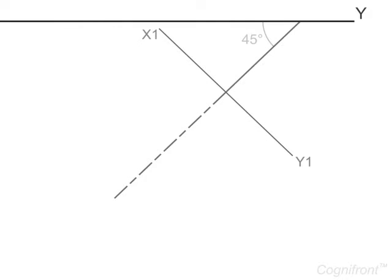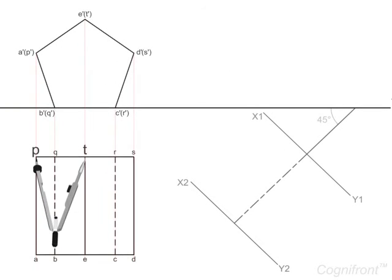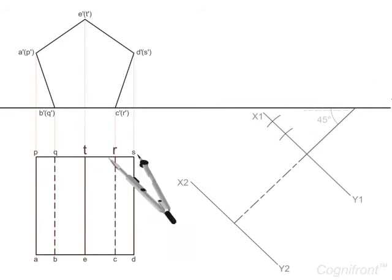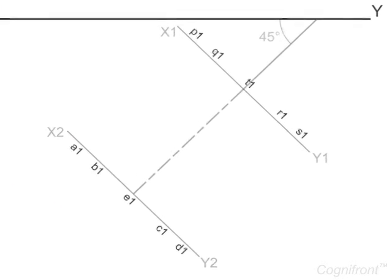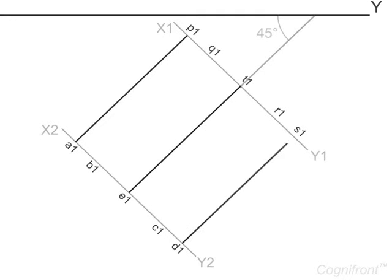Next, we shall draw a line X2 Y2 parallel to X1 Y1 at a distance of 50 mm. Use a divider to measure the distances of the corner points from the existing top view and mark them respectively in this new inclined top view. Finally, connect all points in proper sequence. Here observe that the hidden lines are shown in dotted pattern.